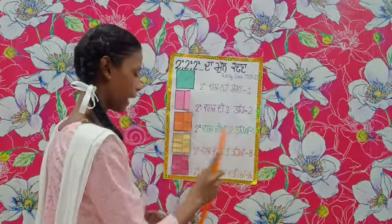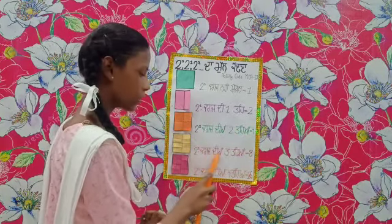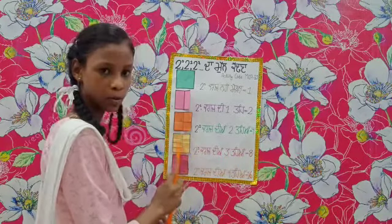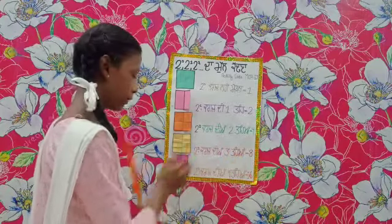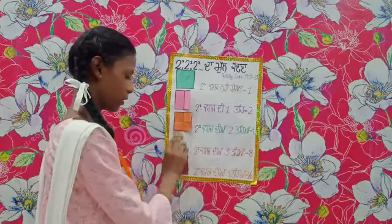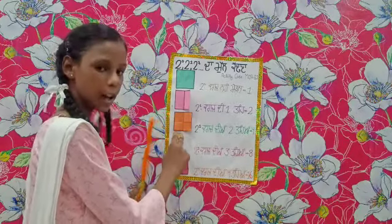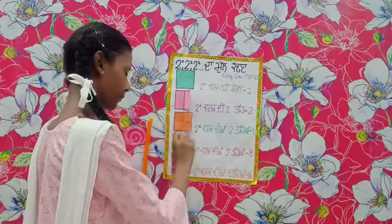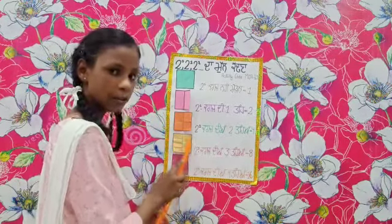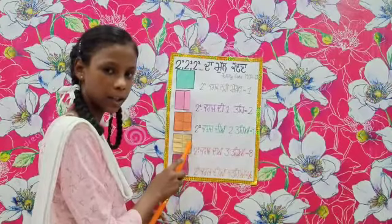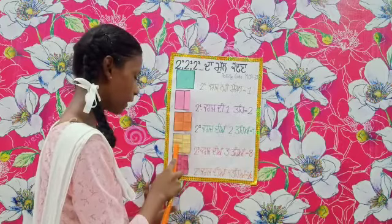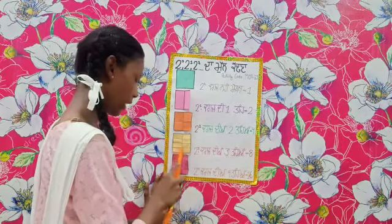Next, for 2 raised to power 3, we will give 3 folds — 1, 2, 3. When we open it up, we count the squares: 1, 2, 3, 4, 5, 6, 7, and 8.